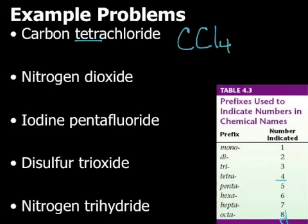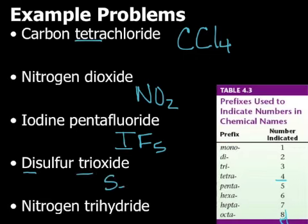Next one, nitrogen dioxide means I have one N, two O's. Iodine pentafluoride, one I, five F's. Disulfur trioxide means I have two S's, three O's, S2O3.